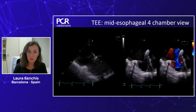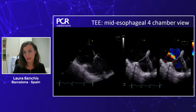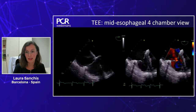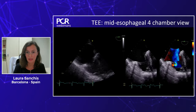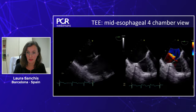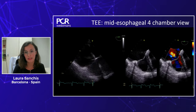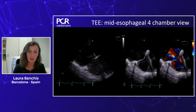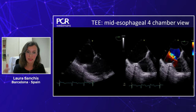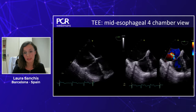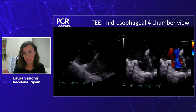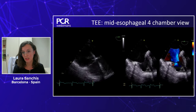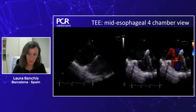Now moving to the TOE. If we want all the views, we need to do a TOE, especially if we aim to repair this valve, because we need a fair echocardiographic window to guide the intervention. We start with zero degrees with a four-chamber view. Sometimes visualization of the tricuspid valve is not great because of shadowing from the atrium, interatrial septum, or left-sided prostheses. If you go a little bit deeper — not mid-esophageal but before transgastric — the window is usually better.